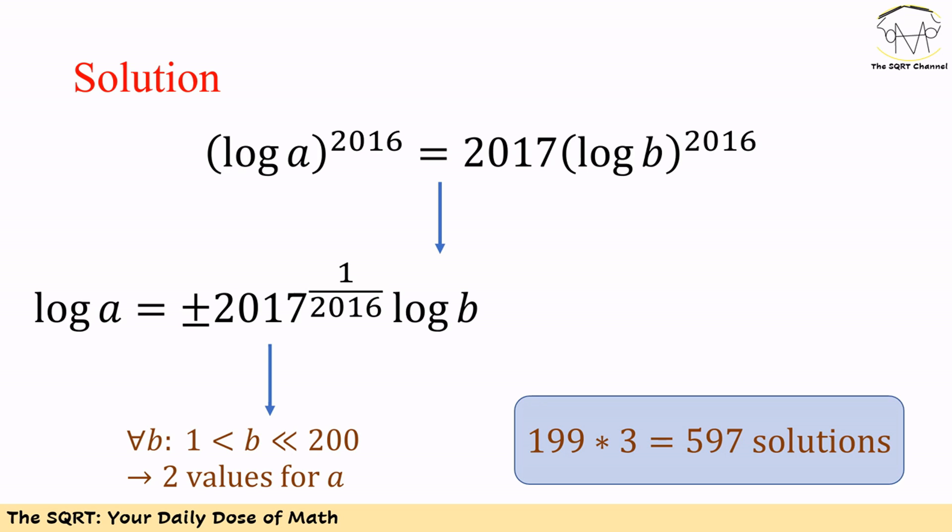We can have both positive and negative values here. For B greater than 1 and less than or equal to 200, each value of B gives two possible values for A, so the total is 2 times 199. Adding the 199 solutions from the case where log A equals 0, we get 199 times 3, which equals 597. That is the total number of solutions for the equation, and that's our answer.